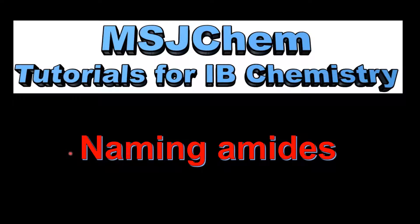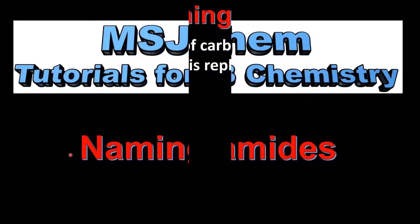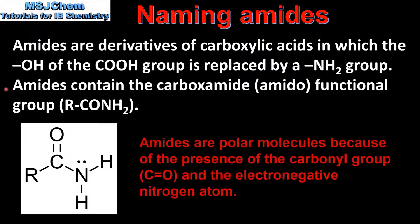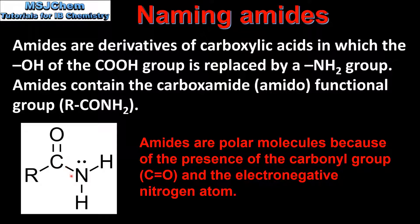This is MSJChem. In this video I'll be looking at naming amides. Amides are derivatives of carboxylic acids in which the OH of the carboxyl group is replaced by an NH2 group. Amides contain the carboxamide or amido functional group. The functional group has a carbon atom with a double bond to an oxygen atom and a single bond to a nitrogen atom. The nitrogen can be bonded to hydrogen atoms or alkyl groups.